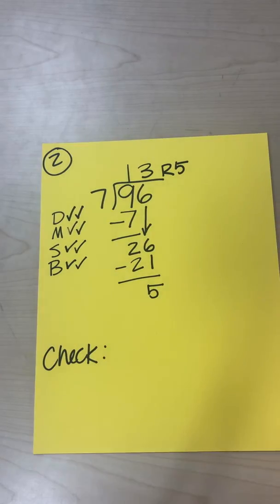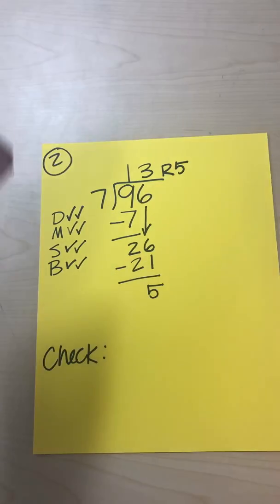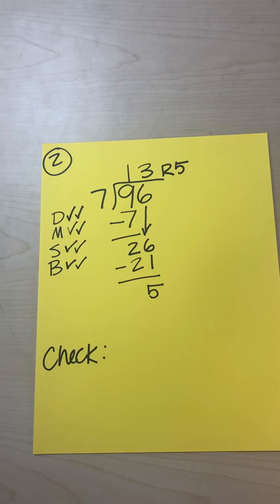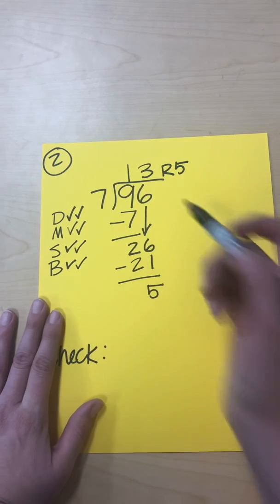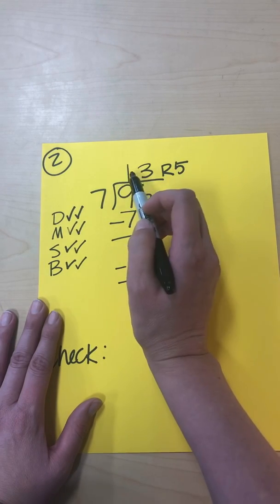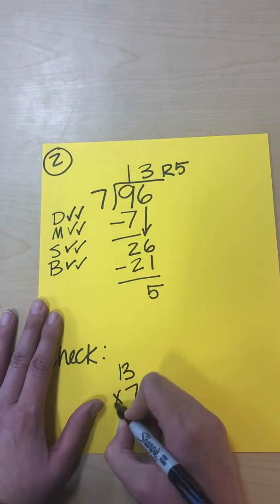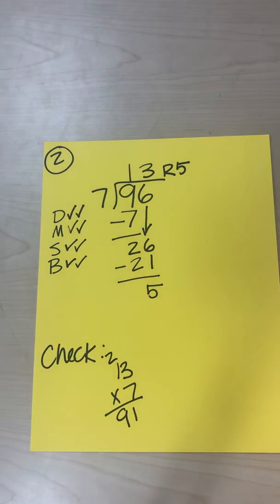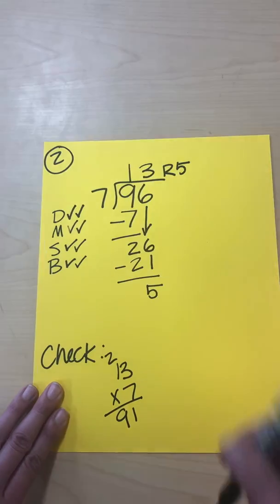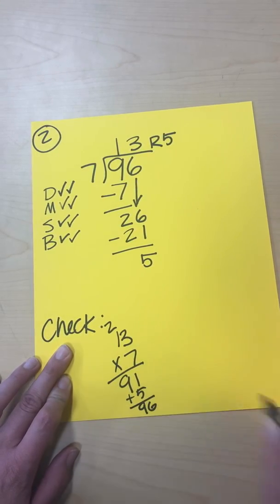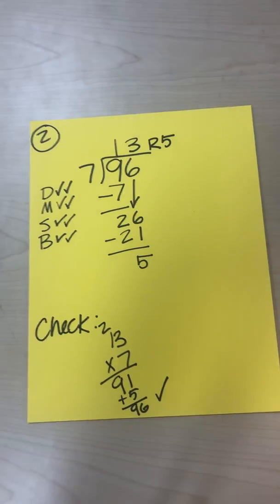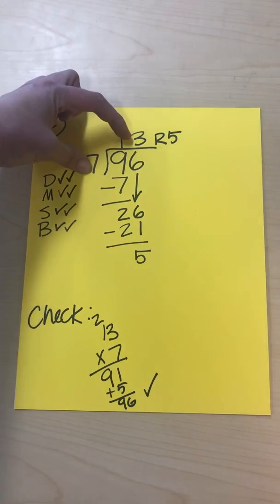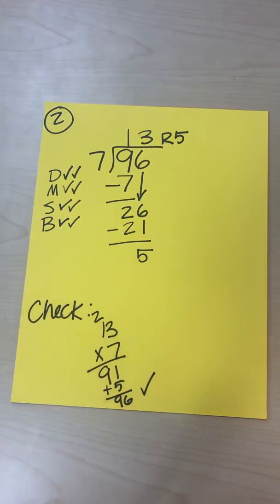If you're ever wondering what to do next, refer back to the steps and check them off as you go. Now let's check: multiply 13 by 7 to get 91. Since we have a remainder of 5, add that in: 91 plus 5 equals 96. We started with 96, so we know we got the right answer. If there's a remainder, you multiply the quotient by the divisor and then add the remainder — and you should get the original dividend.